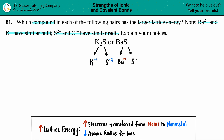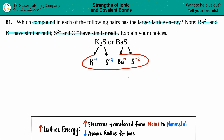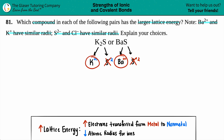The question asks which compound has the larger lattice energy. Things that are the same won't make any difference in making that energy bigger or smaller. So we can eliminate anything that's similar — both compounds contain sulfur, so the sulfur cancels out. We're left focusing on K⁺ versus Ba²⁺. The problem states that Ba²⁺ and K⁺ have very similar radii.